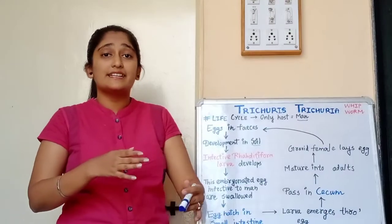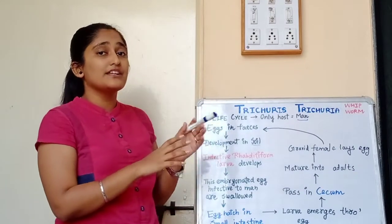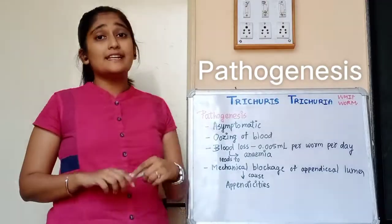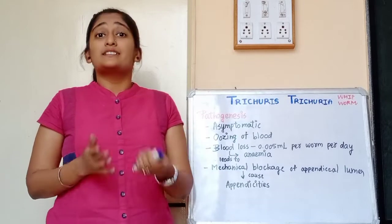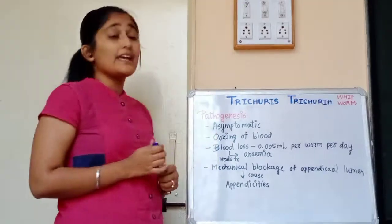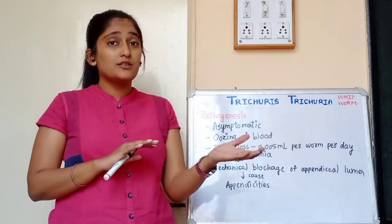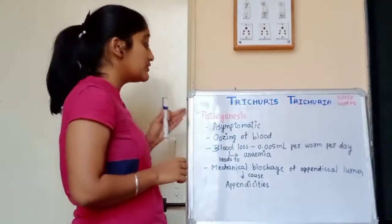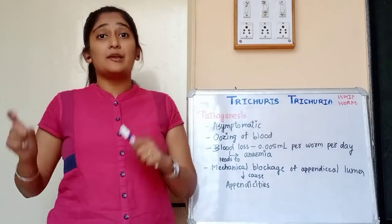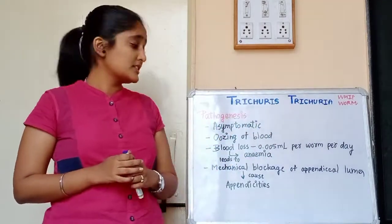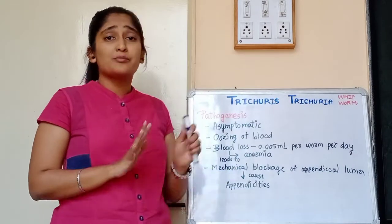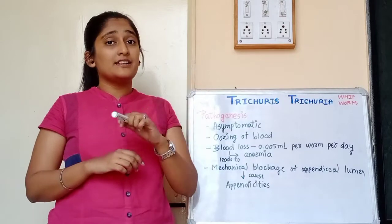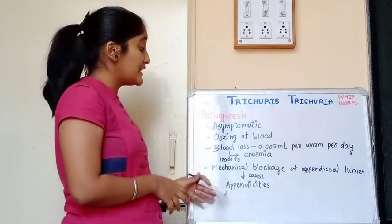The females release eggs, which are passed in feces. The infection is mostly asymptomatic and doesn't show symptoms unless there are many worms. The worm attaches to the cecum, causing oozing of blood — blood loss is 0.005 ml per worm per day — leading to anemia and malnutrition. Mechanical blockage of the appendicular lumen can cause acute appendicitis.